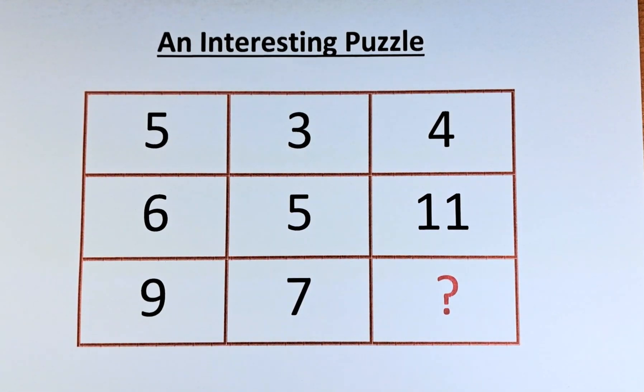Welcome back to the solution of an interesting puzzle. The numbers are straightforward. First row, we have 5, 3, 4.